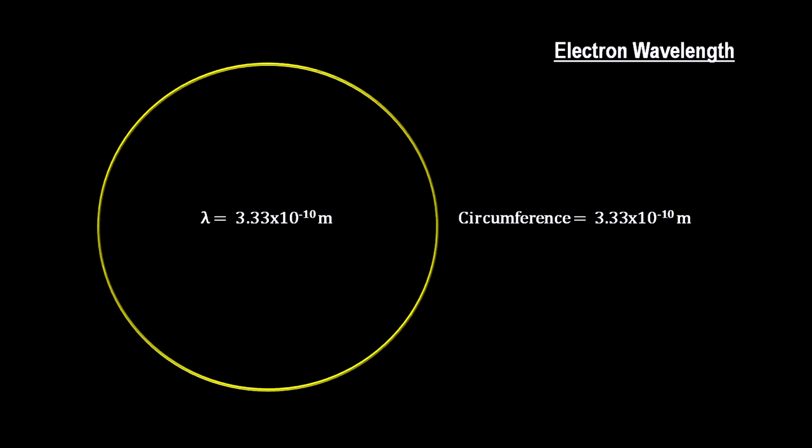In other words, the wavelength of the electron is exactly the length of one revolution. This would create a standing wave.